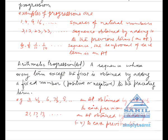4.5, 6, 7.5, 9, etc. is an AP obtained by adding 1.5 to each previous term. Another example: 21, 17, 13, etc. is an AP obtained by adding minus 4 to each previous term.